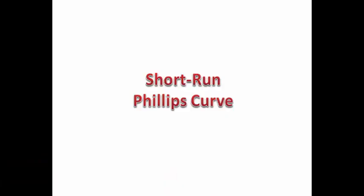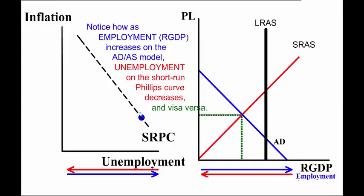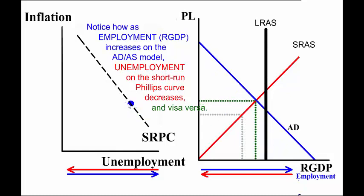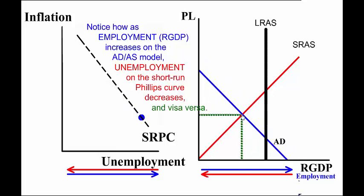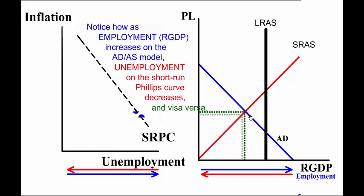The Short Run Phillips Curve shown in this graph on the left is the mirror image of the Short Run Aggregate Supply Curve in the AS-AD graph. Notice as aggregate demand increases, you go from one point on the Short Run Phillips Curve to another point on the Phillips Curve — just like going from one point on the Short Run Aggregate Supply Curve to another point on the Short Run Aggregate Supply Curve.